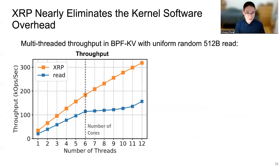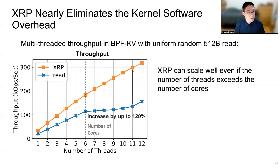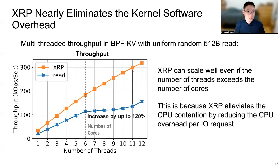To study the performance benefit of XRP, let's look at the multi-threaded throughput from BPFKV with uniform random 512-byte reads. The x-axis is the number of threads and the y-axis is the throughput. We used six CPU cores for the evaluation, shown by the vertical dashed line. Compared to read-syscall, XRP can double the throughput of BPFKV. XRP also scales well even when the number of threads exceeds the number of cores, because XRP alleviates CPU contention by reducing the CPU overhead per I/O request.